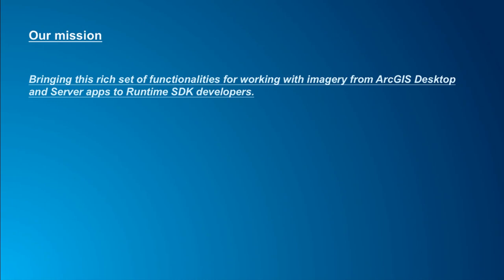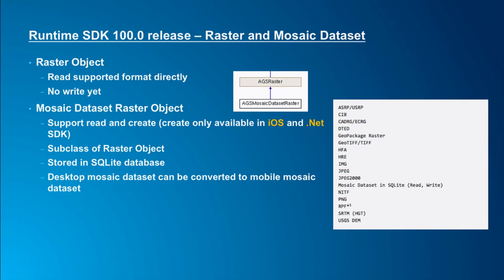What we already have in runtime SDK 100 release: we have a raster object which you can use to read raster formats supported in runtime. This is a brief list of the formats — some military formats, the popular IMG format, JPEG, PNG, and GeoTIFF. However, we don't have write/save imagery capability yet in runtime SDK 100 release.